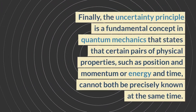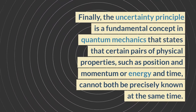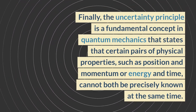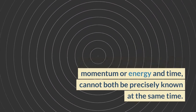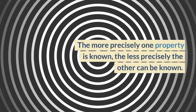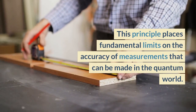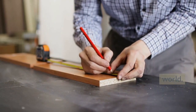Finally, the uncertainty principle is a fundamental concept in quantum mechanics that states that certain pairs of physical properties, such as position and momentum or energy and time, cannot both be precisely known at the same time. The more precisely one property is known, the less precisely the other can be known. This principle places fundamental limits on the accuracy of measurements that can be made in the quantum world.